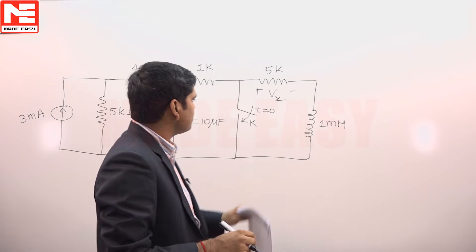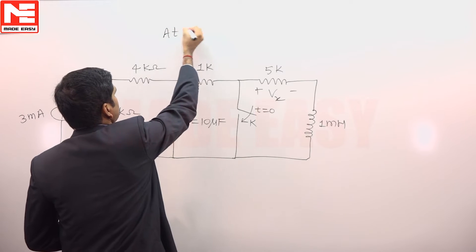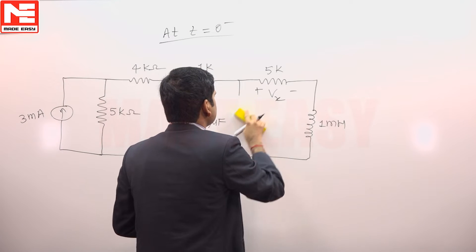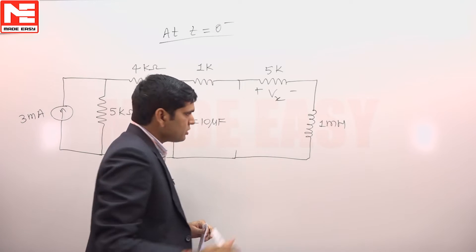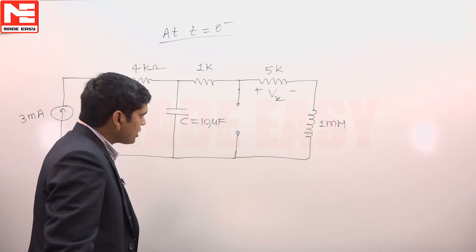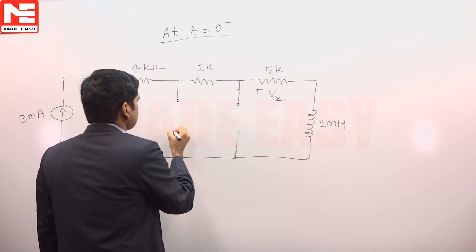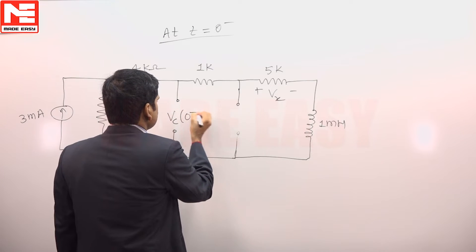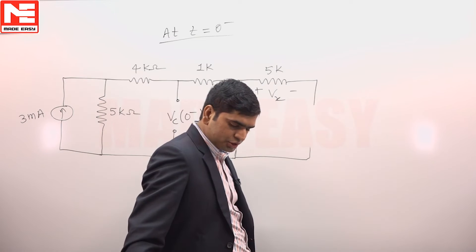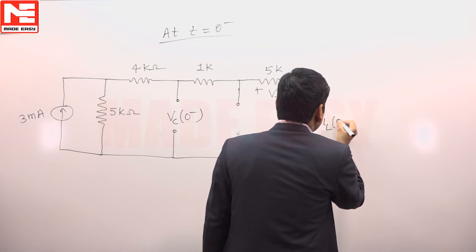The switch is open for t less than 0. For t less than 0, if we want to draw the circuit at t is equal to 0 minus, then circuit is in steady state and this switch is open. In a steady state for DC source, capacitor will behave as open circuit and we can assume this voltage as VC 0 minus. This inductor will behave as short circuit and the current through the inductor can be assumed as IL 0 minus.